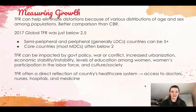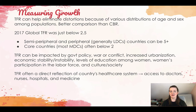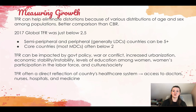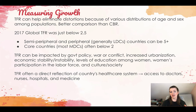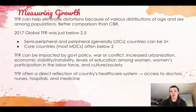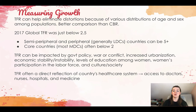Total fertility rate can help eliminate distortions because of various distributions of age and sex among populations, making it a better comparison between countries than CBR. In 2017, the global TFR was just below 2.5. In semi-peripheral and peripheral countries — generally LDCs or less developed countries — the TFR can be five or higher. In core countries, most MDCs or more developed countries, it's often below two.